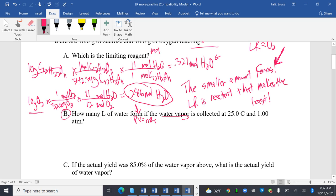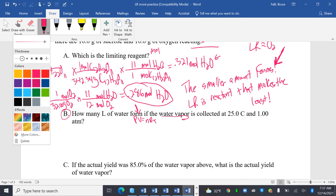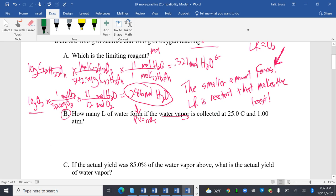Okay. So again, this is what you need to know. The smaller amount is what actually forms. I can't make 0.321 moles of water because I don't have enough oxygen. So oxygen is the reactant that limits the amount of product. That's it. How many liters of water form if the water vapor is collected at 25 degrees Celsius and one atmosphere? So you see I'm starting to use PV because I have T.